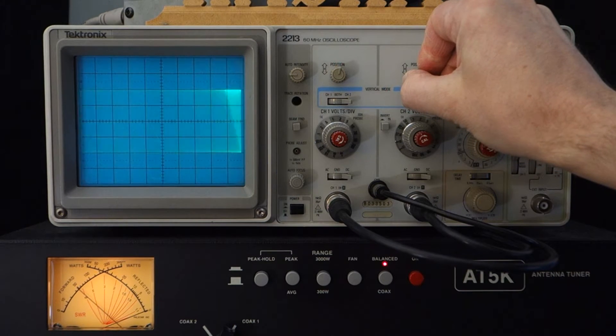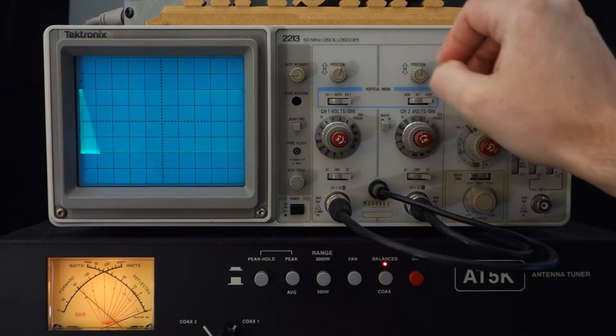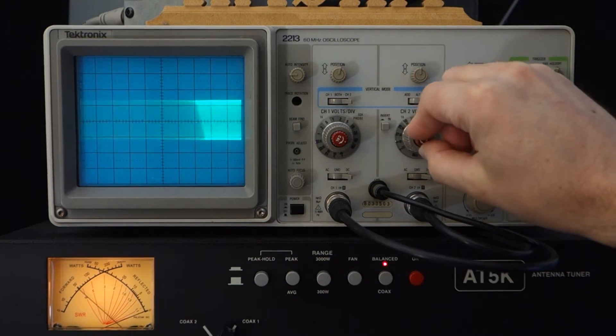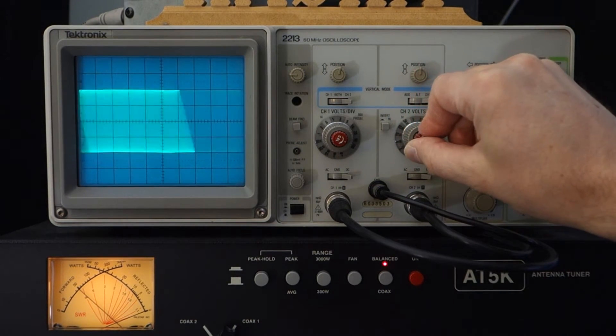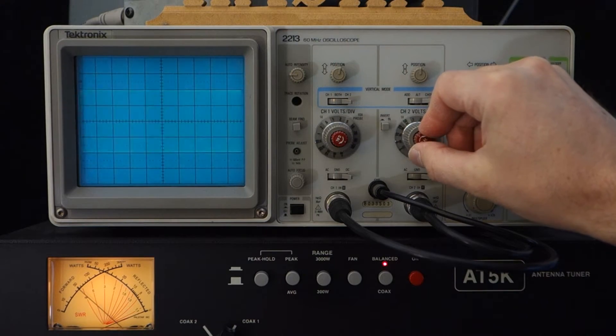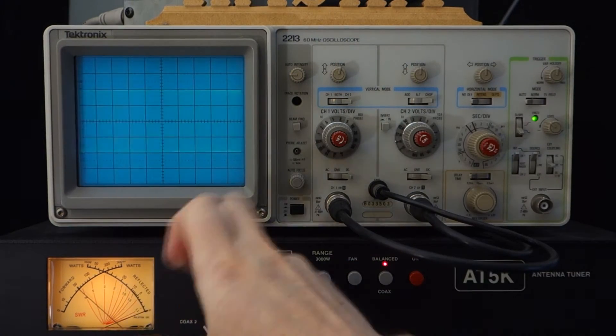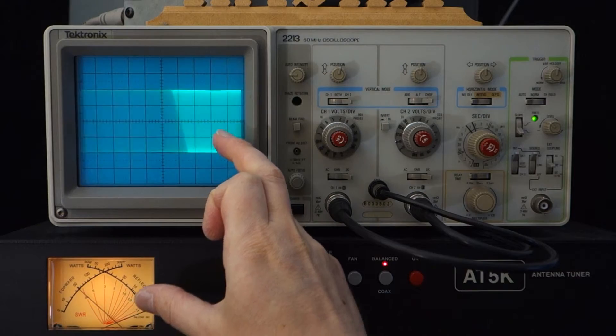what I want to do is move the scope positioning and controls so that they equal, in this case, plus or minus two divisions at 50 watts as seen here.